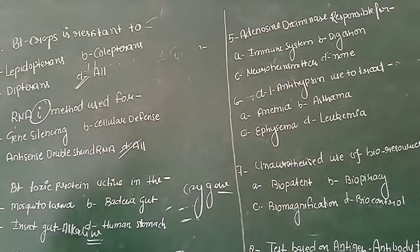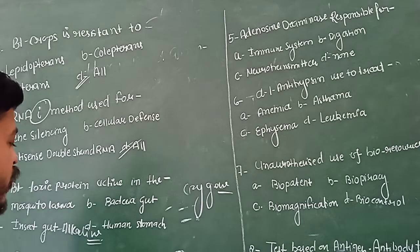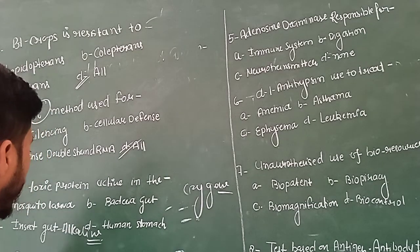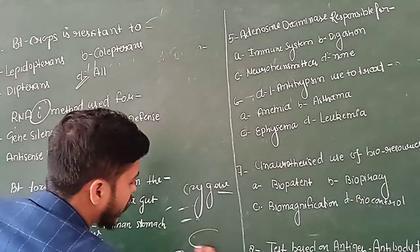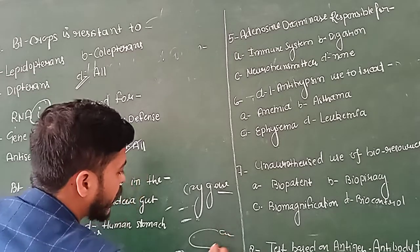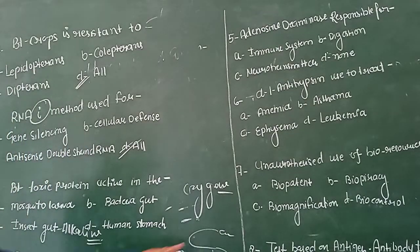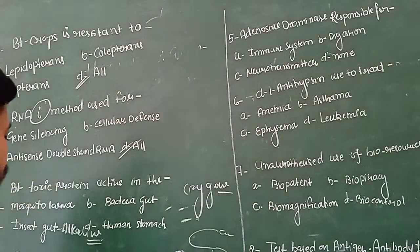The extra peptide in proinsulin is called C-peptide. Human recombinant DNA methods are used to produce insulin. The extra peptide that keeps insulin inactive is called C-peptide, and for making mature insulin you have to remove the C-peptide. That is the correct answer.